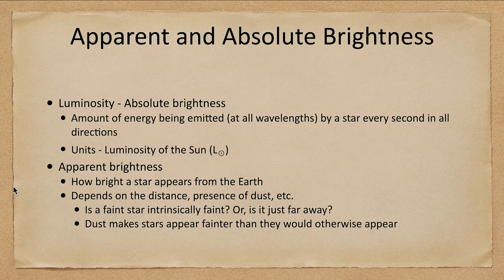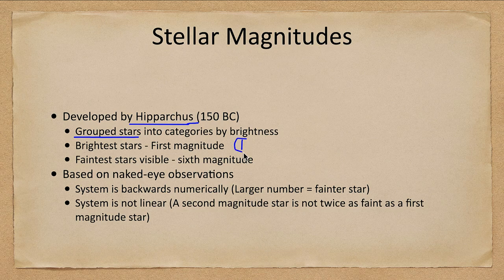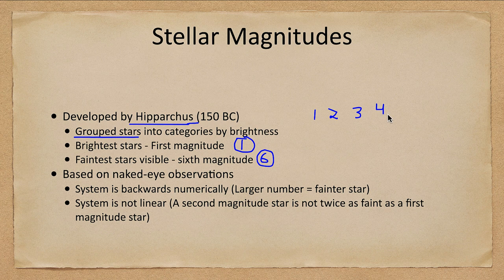Brightnesses are measured in magnitudes. We use stellar magnitudes, which were developed by Hipparchus back around 150 BC. What he did was group stars into categories by brightness. The brightest stars were stars of the first magnitude, and the faintest stars that could be seen were stars of the sixth magnitude — so he had classifications one through six, with the bright stars on one end and the faint stars on the other.